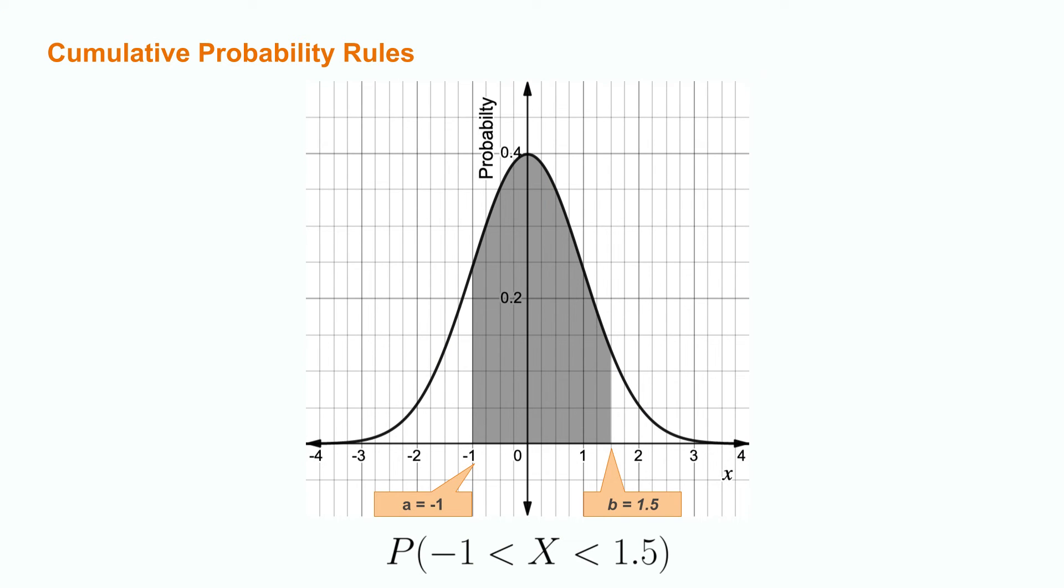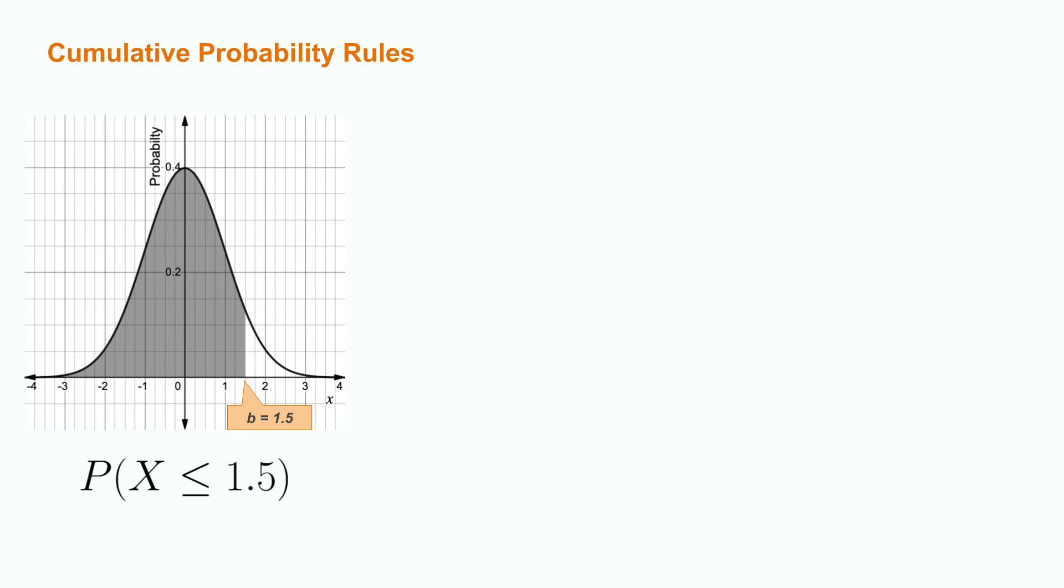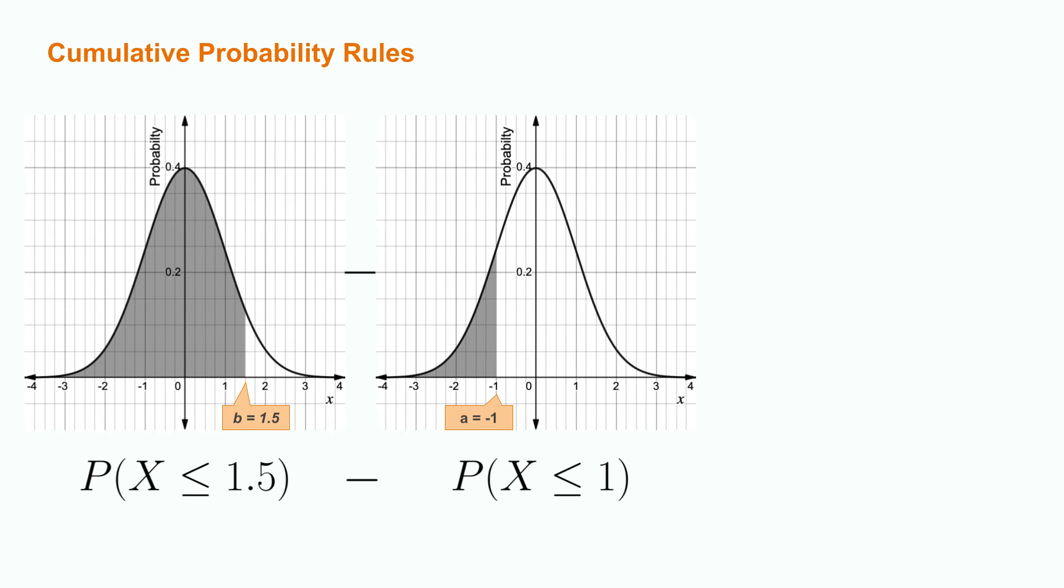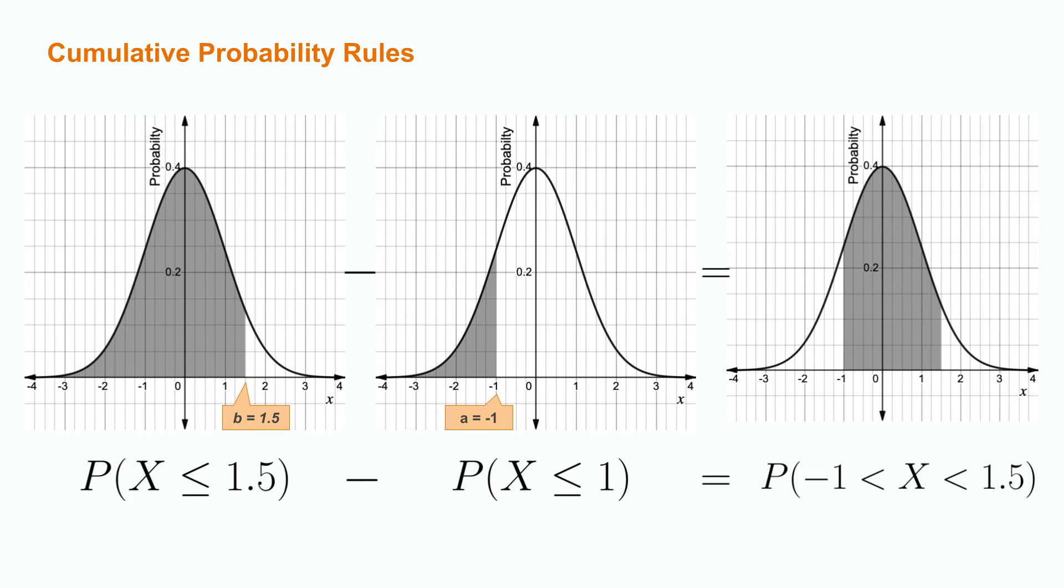For a problem like this, where we want to find the probability of observing something between negative 1, the value of a, and 1.5, the value of b, we would not necessarily be able to do this with a single less than equation. We have to construct this interval from the shaded area to the left of b and then subtract the area to the left of a. This would give us the desired in-between interval.